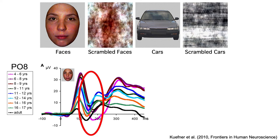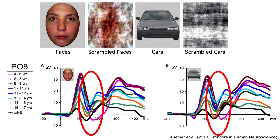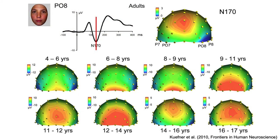But are these huge differences in ERPs a result of changes in face processing, or do they reflect more general changes? If we look at the ERPs elicited by cars, we see the same general pattern of age-related changes. So it seems that most of the developmental changes are not specific to faces.